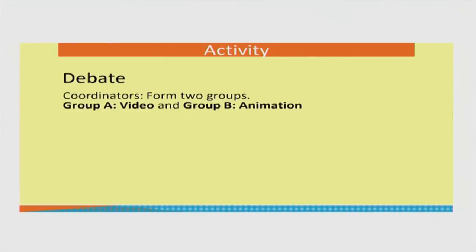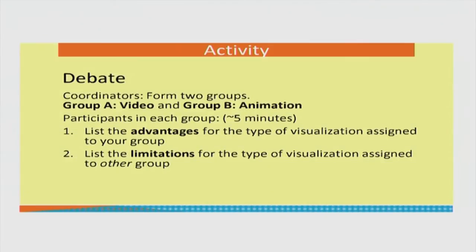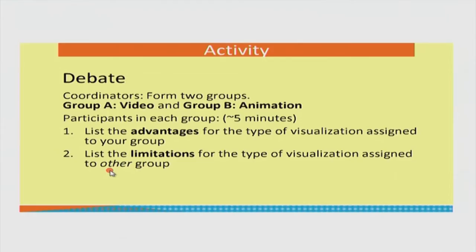Group A is the video group — they have to list the advantages of video and the disadvantages of animation. Group B is the animation group — they have to come up with reasons why animation is a good idea, listing advantages of animation and disadvantages of video. Form two groups and for about 5 minutes list the advantages for the type of visualization assigned to your group, and also list the limitations for the type assigned to the other group.